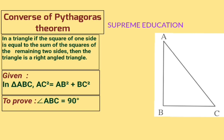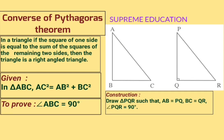To prove this, we do one construction: draw triangle PQR such that AB = PQ, BC = QR, and angle PQR = 90°.